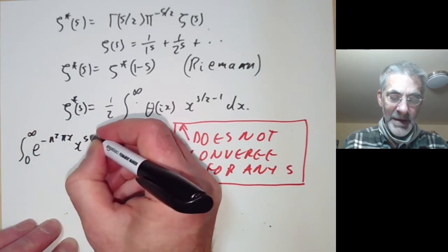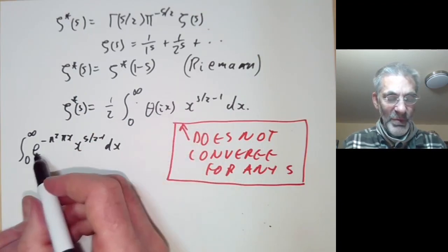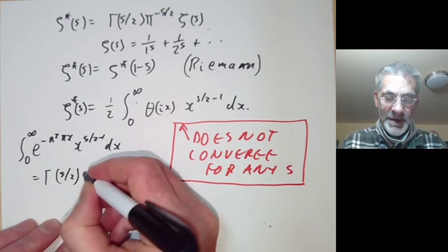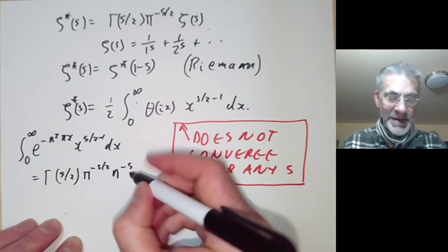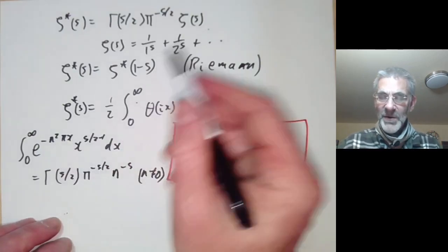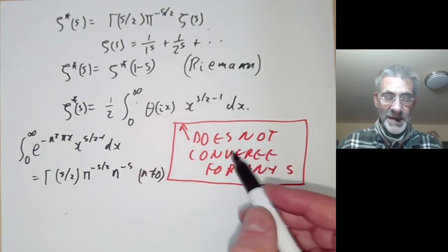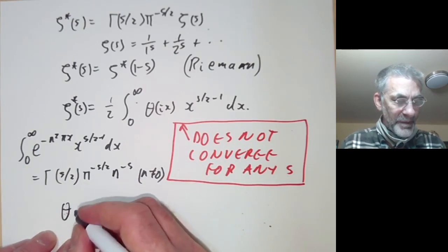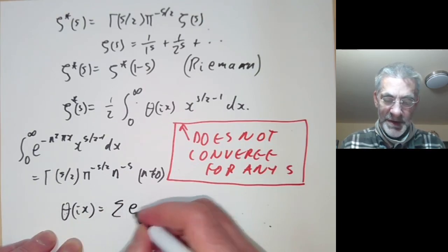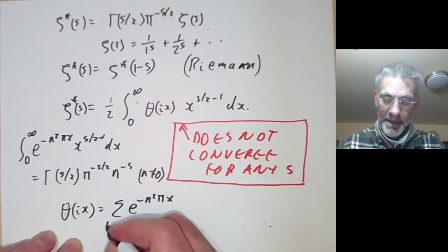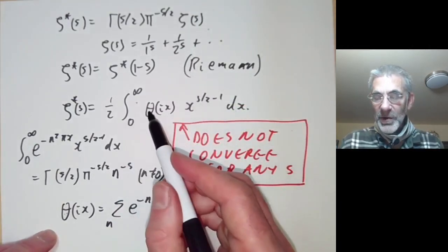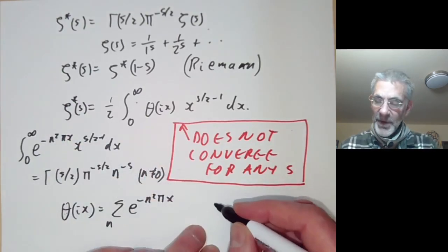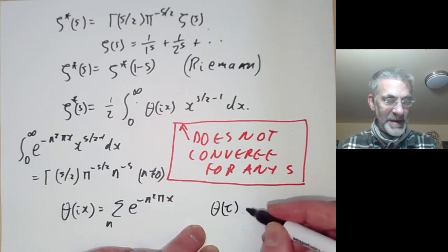This follows from the fact that the integral from zero to infinity of e to the minus n squared pi x times x to the s over 2 minus 1 dx is essentially the usual integral for the gamma function and equals gamma of s over 2 times pi to the minus s over 2 times n to the minus s, for n not equal to zero. Since theta of ix equals the sum of e to the minus n squared pi x, the integral of theta with x to the s over 2 minus 1 is formally equal to zeta-star of s.